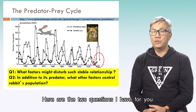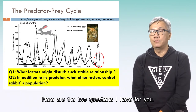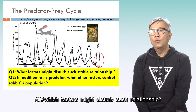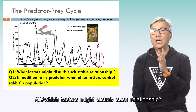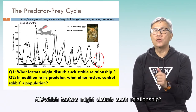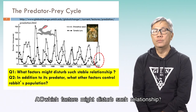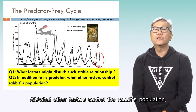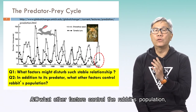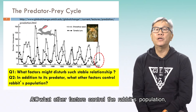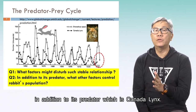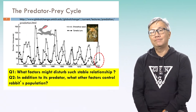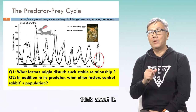Here are two questions: one, which factors might disturb such a relationship? Two, what other factors control the rabbit's population in addition to its predator, the Canada lynx? Think about it.